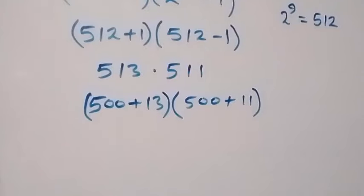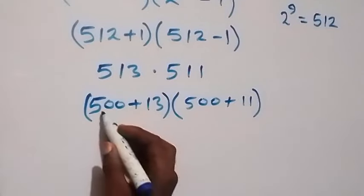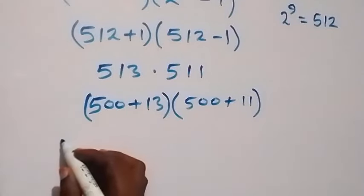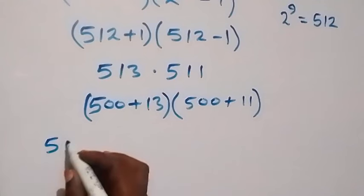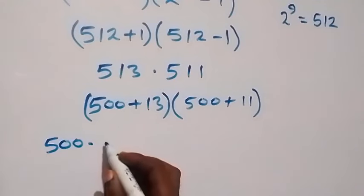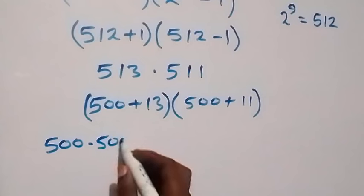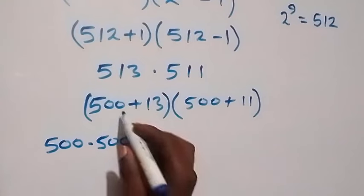Then, we can expand here and this here will become 500 we first multiply. So, we have 500 times 500. Then, plus 500 times 11.